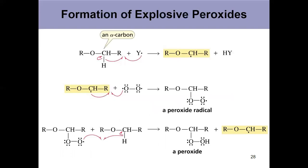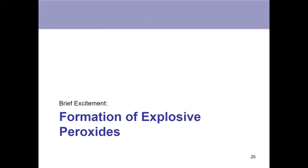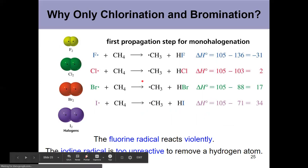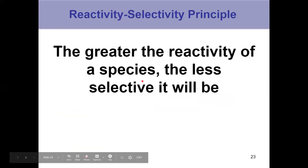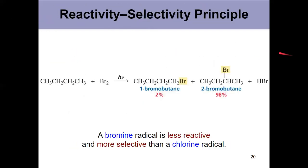The big takeaways from this video: know that you can only do chlorine and bromine; know that you want your hydrogens to be the same for chlorination; know the reactivity-selectivity principle; and know bromination and how to calculate numbers like that. Short video cleaning up bromination and chlorination, so that in our future videos we can talk about things like radicals and alkenes coming together.